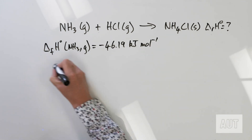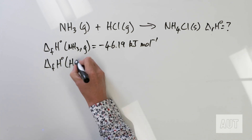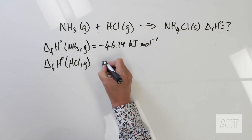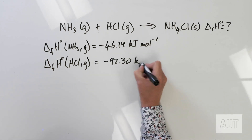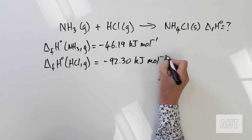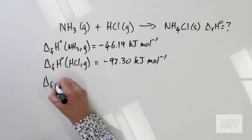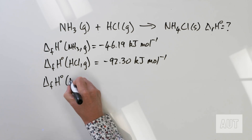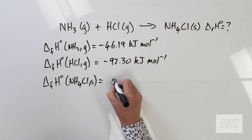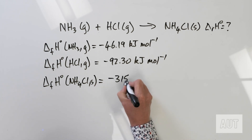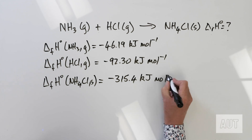For HCl gas, that is minus 92.30 kJ per mole. And for ammonium chloride solid, that has a value of minus 315.4 kJ per mole.